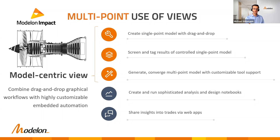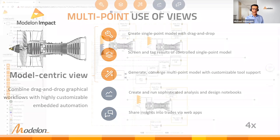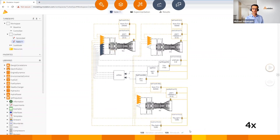In the second step you run simulations on a normal single-point model — whether on-design or off-design — and look at your results, naming them appropriately so you can reference them later. In the third step, you generate and converge the first multi-point model with tool support, reusing the previous single-point results. The tool collects data from a results database, assembles it as a guess for the multi-point model, and converges it interactively. Then you can trigger automated analysis via notebooks or web apps.